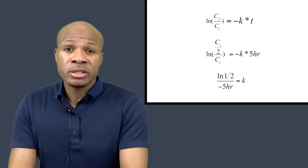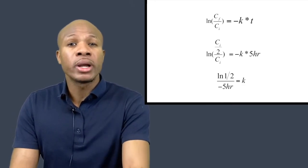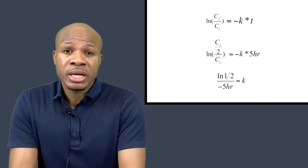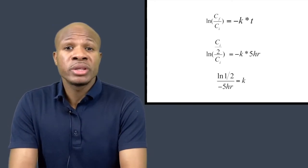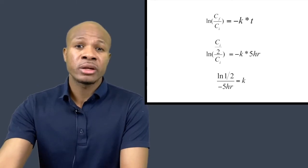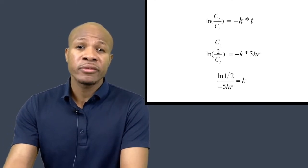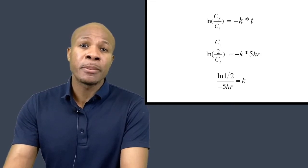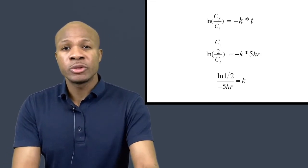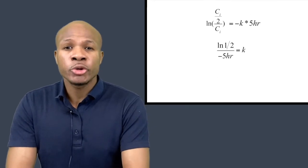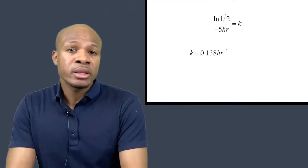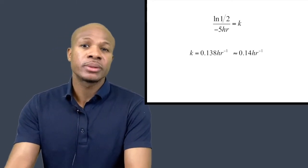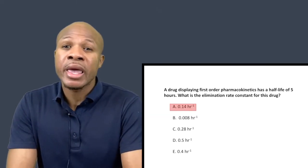Now we just need to solve for k. We divide both sides by minus t. C_final over C_initial equals one-half, so in the numerator we have the natural log of one-half divided by minus five, and that equals k. When we plug that into our calculator, we get 0.138 hours to the negative one power, which is approximately 0.14. Our answer is A.